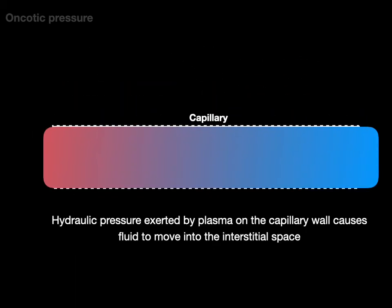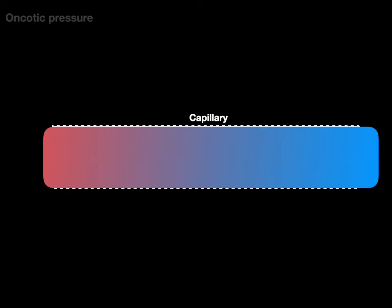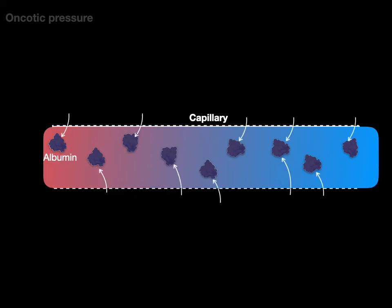Hydraulic pressure exerted by plasma on the capillary wall causes fluid to move into the interstitial space — so hydraulic pressure is like a pushing force. But inside these capillaries is this large protein called albumin. There are openings in the capillary wall for fluid like water and solutes like sodium to go through, but they're too small for albumin to go through. Since albumin is water-soluble and takes up space, to achieve equal water concentration on either side it actually creates a drawing or sucking pressure.